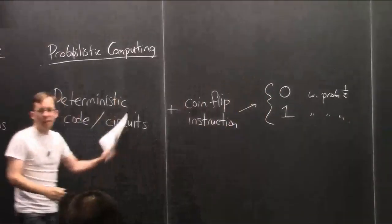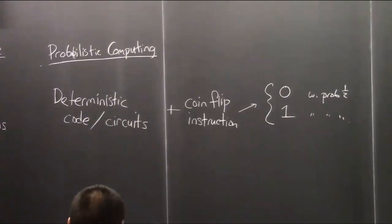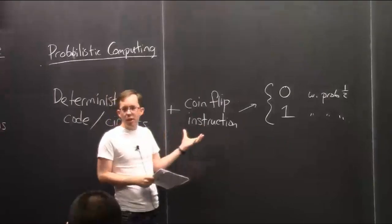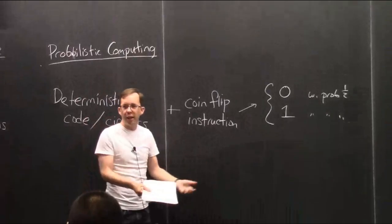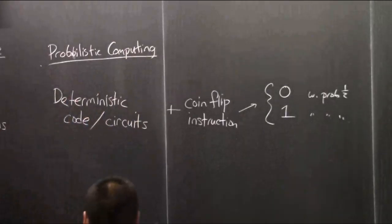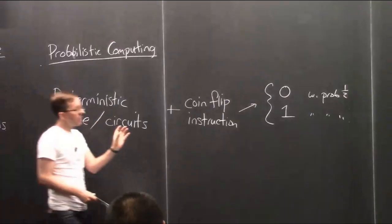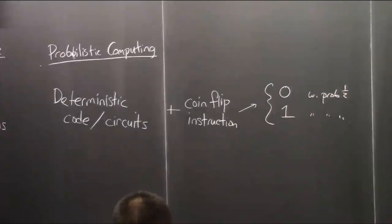By definition, this new instruction is like a little function that returns zero with probability one-half and one with probability one-half. You allow yourself this instruction, and then you ask: what can I do? You can also ask whether you can actually do this in physical reality. It's no problem to mathematically model this, but you'd like it to correspond to some physical reality. Whether you can actually get truly random bits in nature is a bit of an interesting philosophical and physics question.